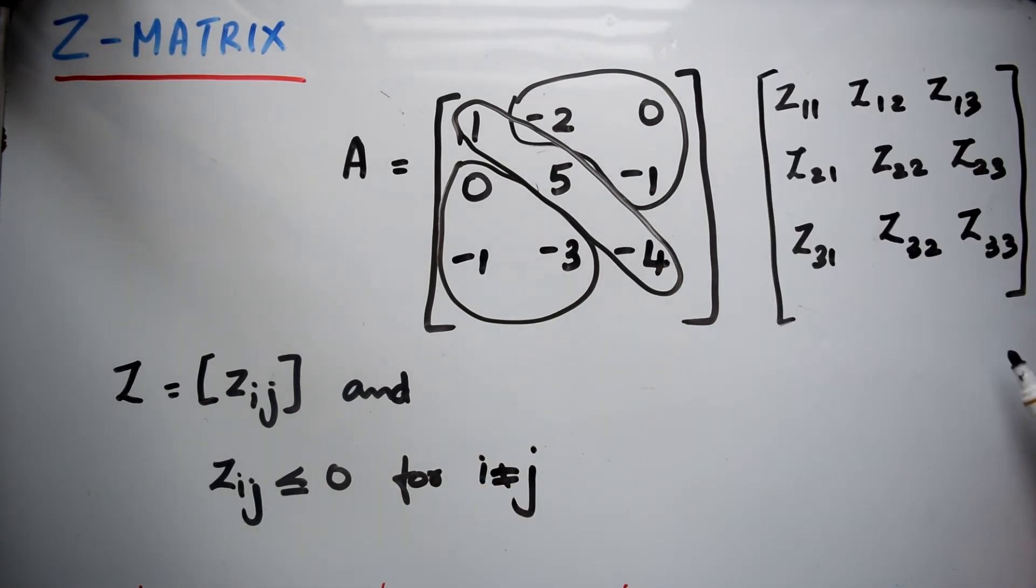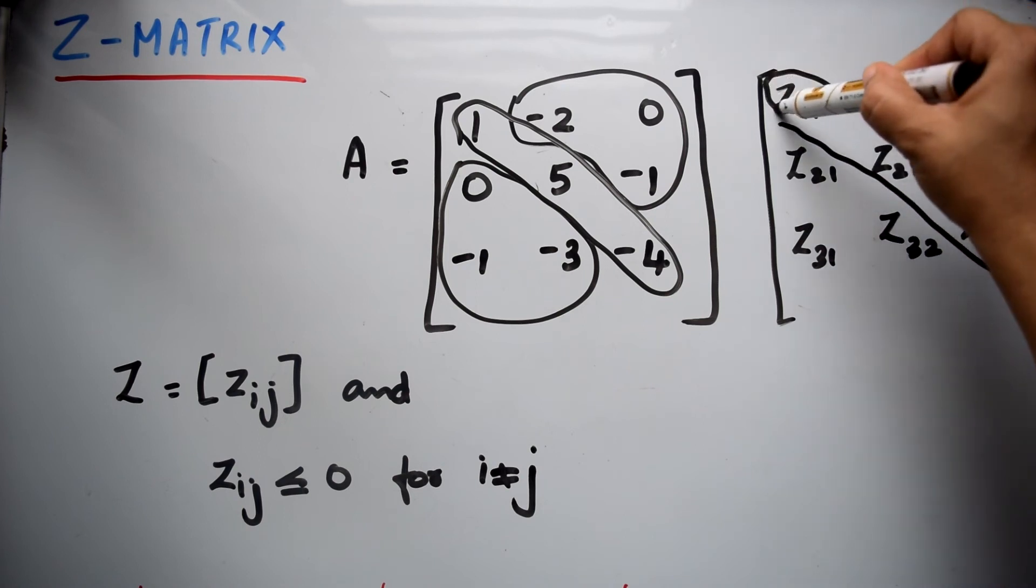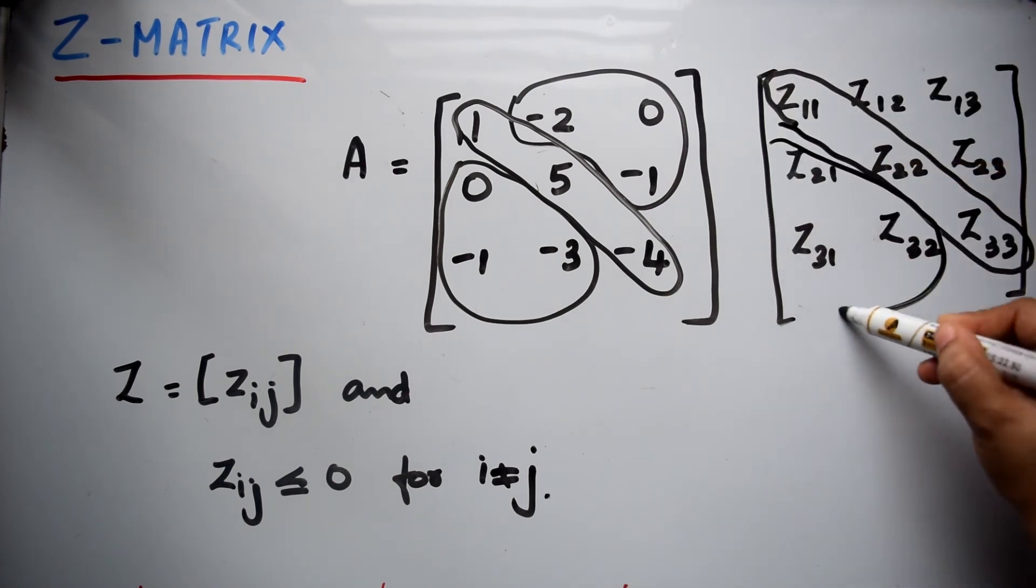So if you write it in this form, it will be like this. When i is equal to j, it indicates the diagonal elements. And when i is not equal to j, it indicates the off-diagonal elements.